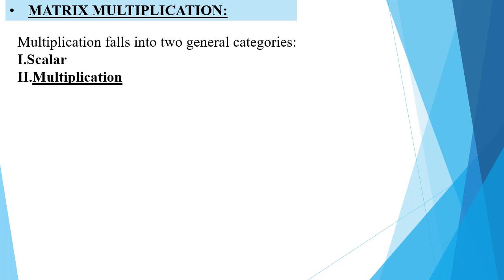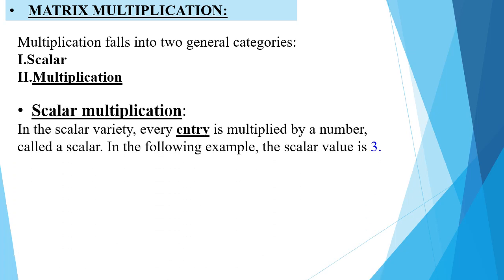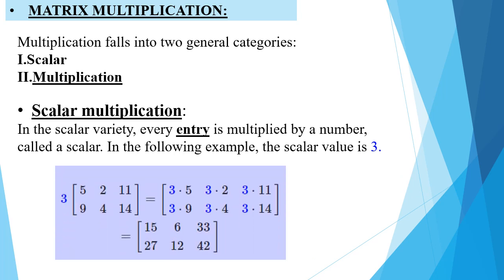Matrix multiplication falls into two general categories. The first one is scalar multiplication and the second is matrix multiplication. In scalar multiplication, every entry is multiplied by a number. You can see the example: 3 is the scalar value here, multiplying with the matrix. So in scalar multiplication, 3 is multiplying with every entry of the matrix.